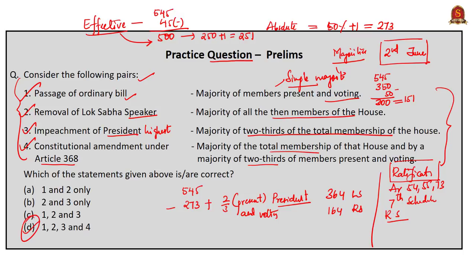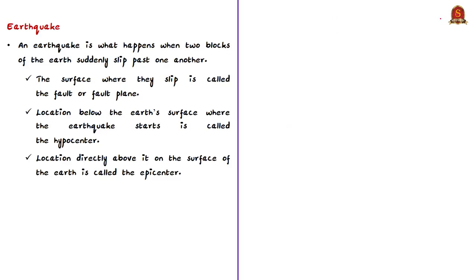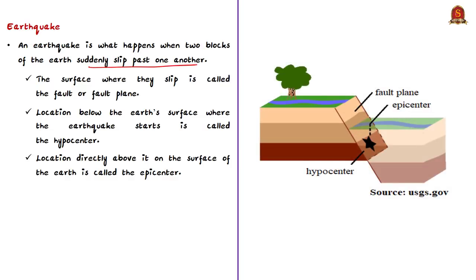Now let us start today's news analysis. This discussion is based on a news article which says that the National Capital Region around Delhi has witnessed several minor earthquakes. In this context, let us discuss briefly about earthquakes, how they occur, and how they are measured. Simply put, an earthquake is intense shaking of the earth's surface. An earthquake happens when two blocks of earth suddenly slip past one another. The surface where the slip occurs is called the fault or fault plane. The location below the earth's surface where the earthquake starts is called the hypocenter, and the location directly above it on the surface where the earthquake is felt is called the epicenter.